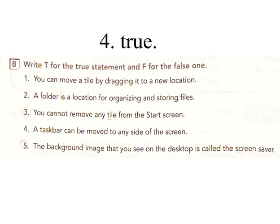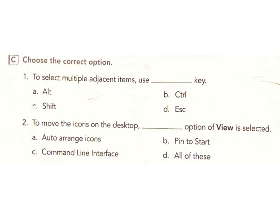Question 4: A taskbar can be moved to any side of the screen. Answer: True. Question 5: The background image that you see on the desktop is called the screen saver. Answer: False. C: Choose the correct option. Question 1: To select multiple adjacent items, use the Shift key. Options: A) Alt, B) Control, D) Escape, C) Shift. Answer: C, Shift.